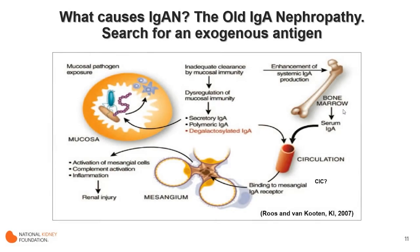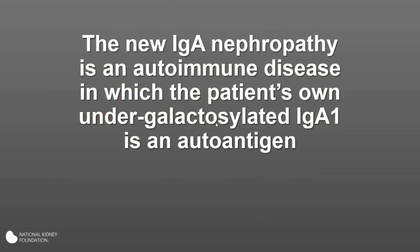Turning to pathogenesis: for a long time, exogenous antigens were sought to explain why patients got IgA nephropathy, but those searches were really failures. We now understand that IgA nephropathy is an autoimmune disease in which the patient's own endogenous, undergalactosylated IgA1 becomes an autoantigen.